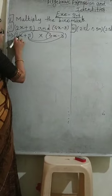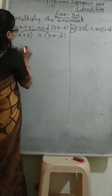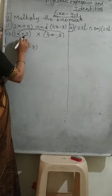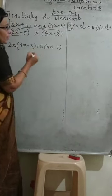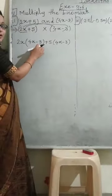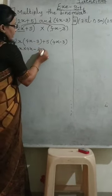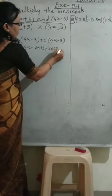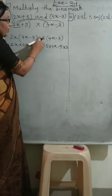The first one given is 2x plus 5 and 4x minus 3. Now how to multiply: we will write 2x plus 5, then a multiplication sign, and 4x minus 3 will come. The first term we will multiply to 4x, then the first term we will multiply to 3, then the second term we will multiply to 4x, and again the second term we will multiply to 3.